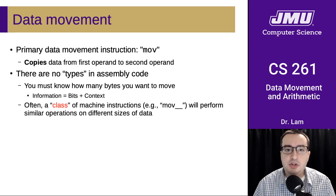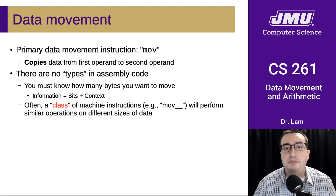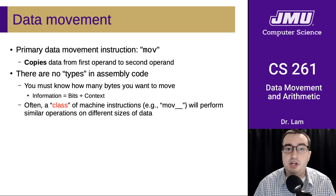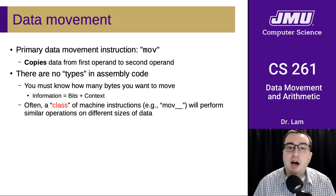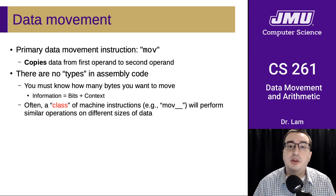A complication we haven't really addressed yet is that there aren't any types in assembly code, so you have to know how many bytes you want to move. This is yet another place where we want to emphasize the core concept that information is bits plus context. You can't do a useful data movement operation if you don't know how much data you want to move. Often, there will be not just a single machine code instruction, but a family or class of instructions that perform similar operations on different sizes of data.